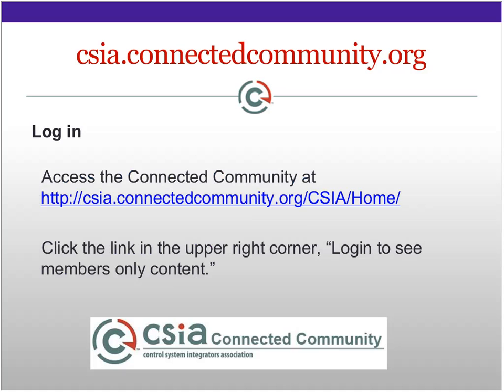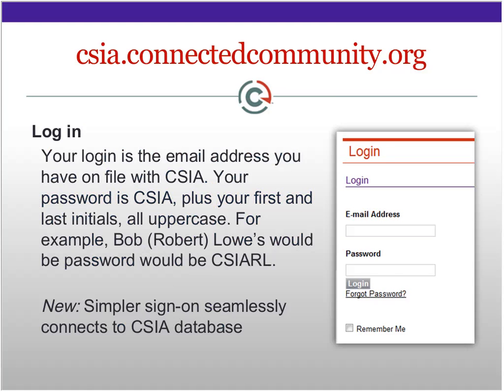You're going to go up to the upper right-hand corner and log in to see members' content. Your login is going to be your email address. And your password, if you've never logged in before, is going to be 'CSIA' all uppercase, and your first and last initials, also uppercase. What's new here is that we've also changed this sign-on to make it more seamless. When you do this, you'll notice that you actually connect to a different website which hosts the CSIA database.